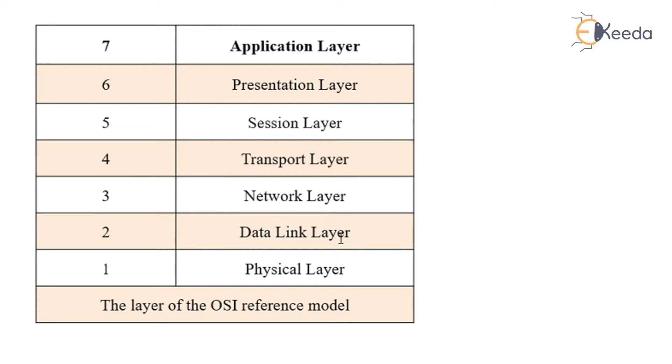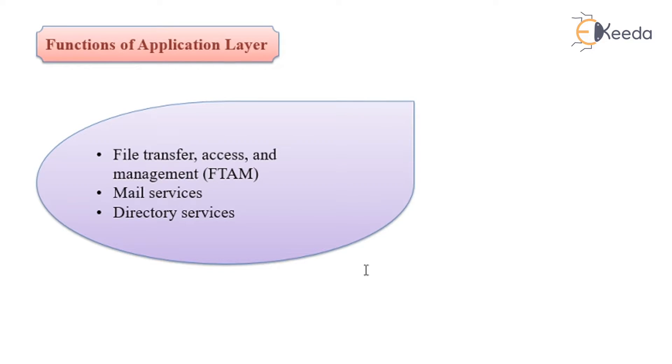Each of these layers utilizes the service provided by the layer below. Looking at the functions of the application layer, which is the topmost layer. The functions of application layer include file transfer, access and management. It also includes mail services and directory services.